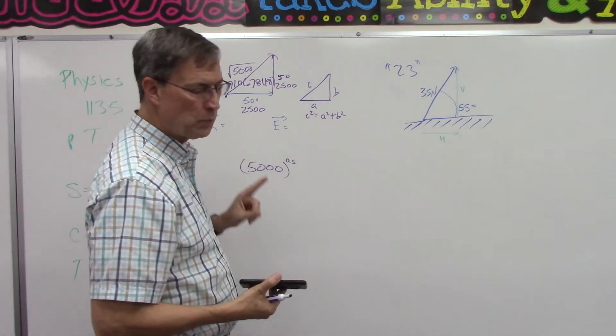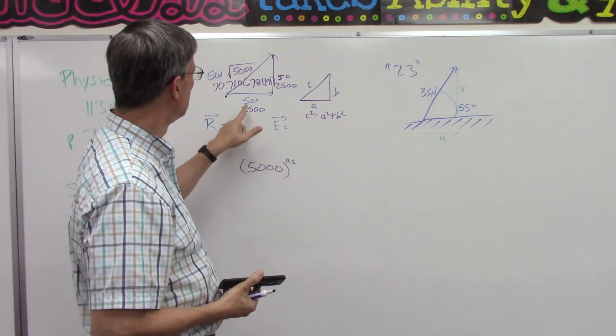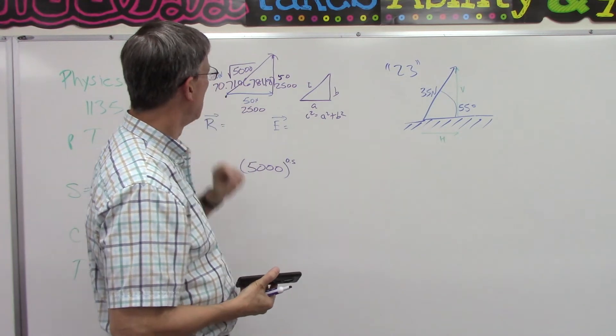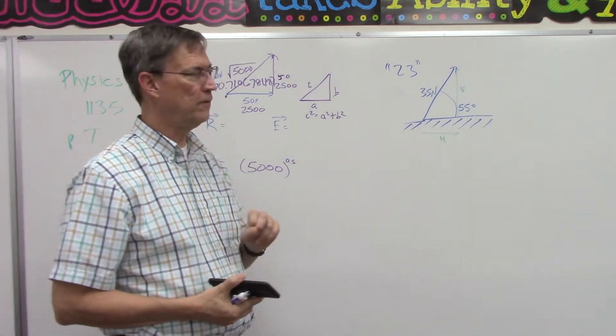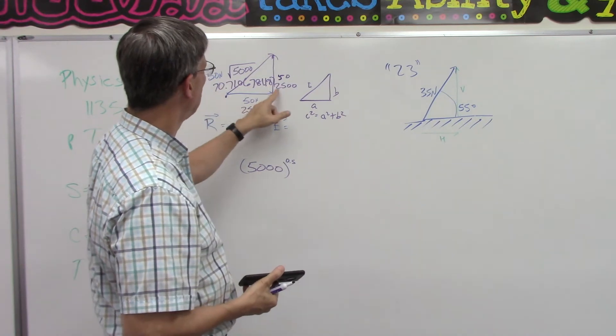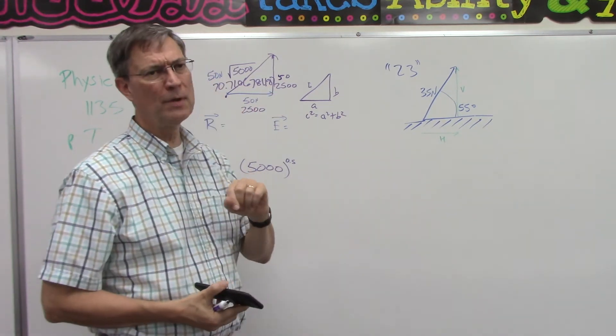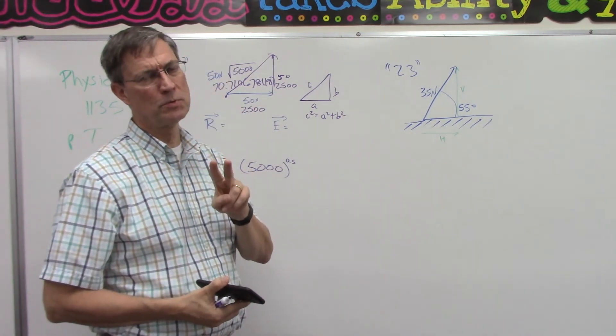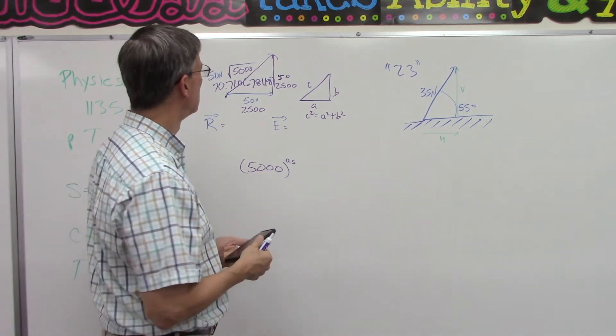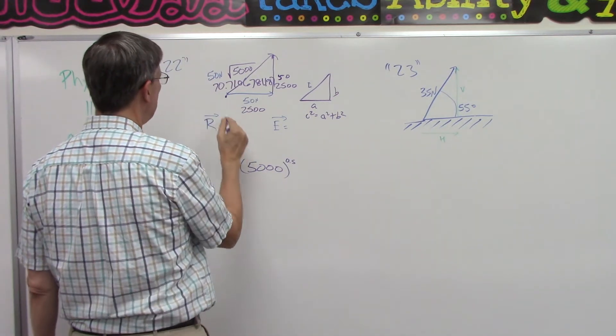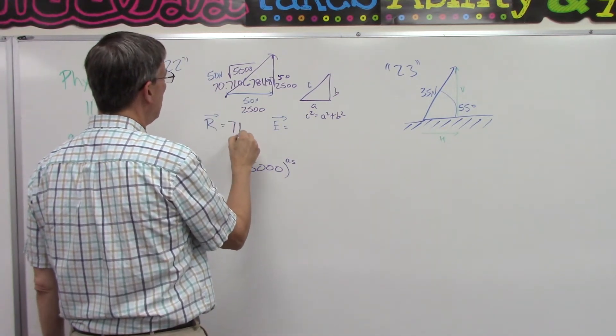Well, because we have two significant figures in both of these numbers, we have to round our answer to two significant figures. So we can't write that whole thing. And we don't even round it to one decimal or two decimals. We just say two significant figures. So we would have to round that to be 71, okay?